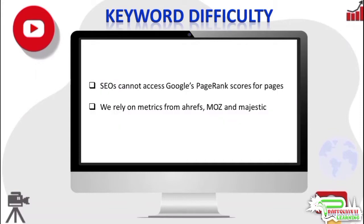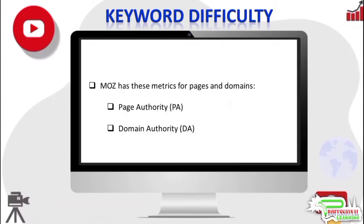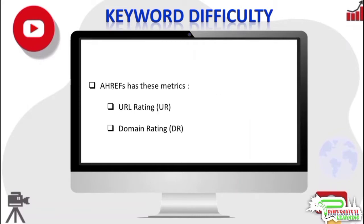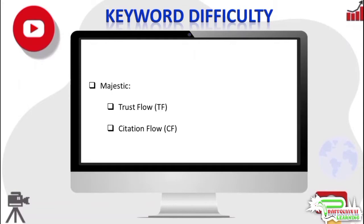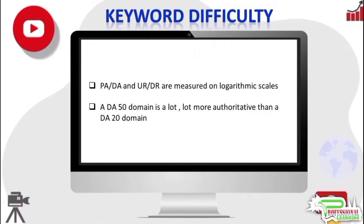Since SEOs cannot access Google's PageRank scores for web pages, we rely on metrics from ahrefs, moz, and majestic to make our decisions. Moz has two metrics for pages and domains: page authority and domain authority. Ahrefs has URL rating and domain rating. Majestic has trust flow and citation flow — also commonly called flow metrics — which are not exactly the same as moz's page authority and domain authority, or ahrefs' URL rating and domain rating. We'll look at this more in the next video.